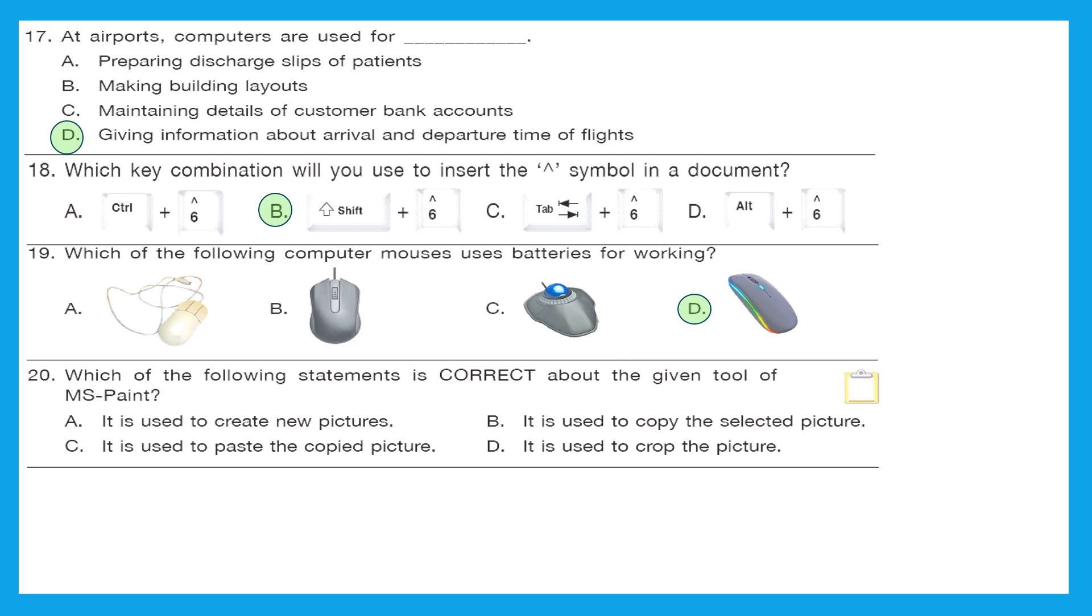Question 20: which of the following statements is correct about the given tool of MS Paint? See the tool and let's find out. A it is used to create new pictures. B it is used to copy the selected picture. C it is used to paste the copied picture or D it is used to crop the picture. The right answer is option C. It is used to paste the copied picture.